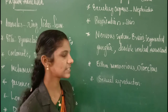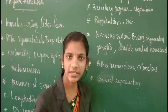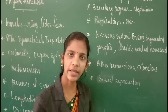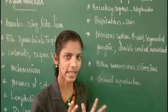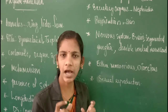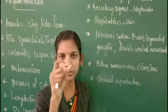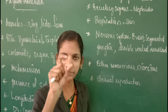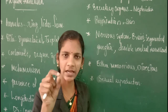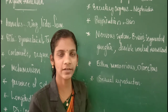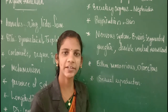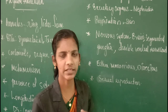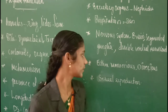The next one is the nervous system. The nervous system consists of a central brain, a double ventral nerve cord, and ganglia — masses of nerve cells which can be seen in different parts of the body. They have a brain, a double ventral nerve cord, along with different ganglia.